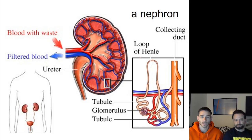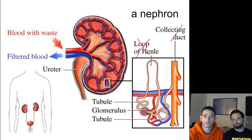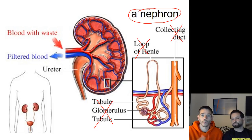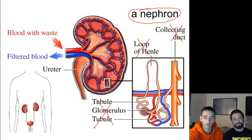This is what a nephron looks like. There are a lot of terms here, but for this class don't worry about memorizing the specific names — if you take AP Bio you'll go into more detail. What we want to know is that a nephron is the main functional unit of the kidney. Its job is to filter the blood and create the waste we excrete as urine — kind of like the alveoli in the respiratory system or the villi in the digestive system.